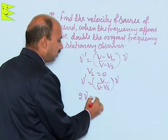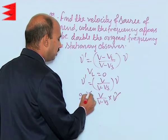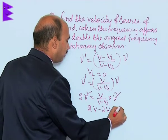We can write here 2 nu is equal to V upon V minus V s into nu. This and this will get cancelled. We can get 2V minus 2V s is equal to V.